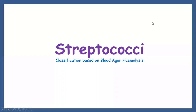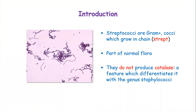Welcome. Today we are going to look at Streptococcus classification based on its ability to hemolyze blood agar. We have different classifications, but today we are going to look at the one concerning hemolysis of blood agar. As an introduction, Streptococcus is a gram-positive bacteria, and you can see from the image here the purple coloration after staining, which is indicative of gram-positive bacteria.